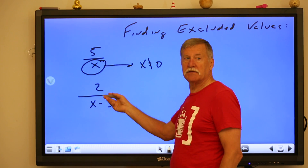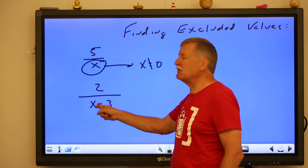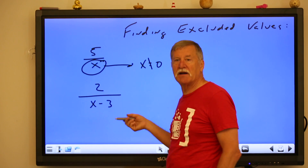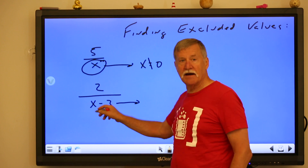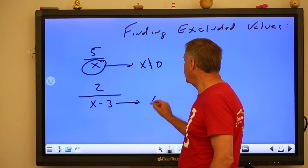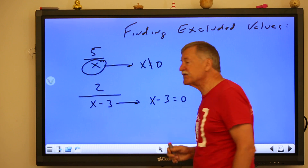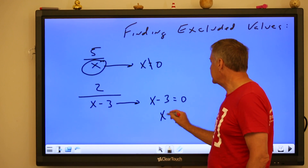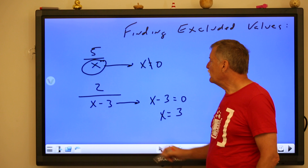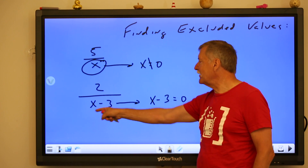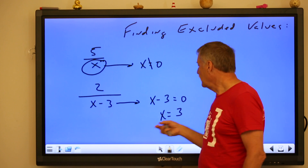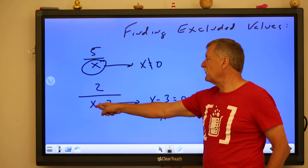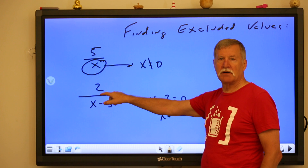For an expression with denominator x minus three, we set x minus three equal to zero. Add three to both sides and we get x equals three. Sure enough, if x is three, then three minus three equals zero — we have a problem. So the excluded value here is x cannot equal three. If x were three, the denominator would equal zero, but x could be pretty much anything else.